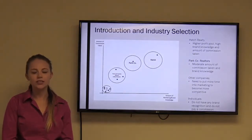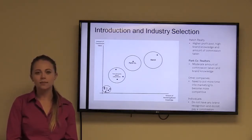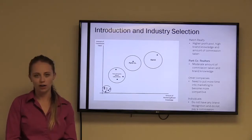Here is our strategic group map. We chose two different variables. The first is the amount of commission taken. The second is the amount of marketing and brand knowledge that they have.